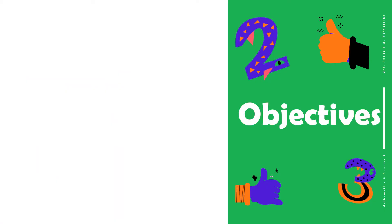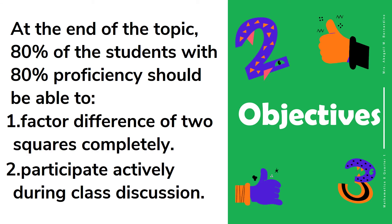For the objectives, at the end of the topic, 80% of the students with 80% proficiency should be able to: first, factor difference of two squares completely; and second, participate actively during class discussion.